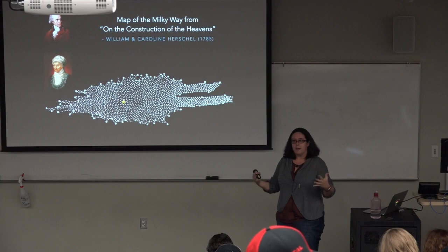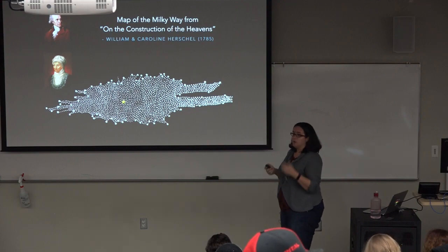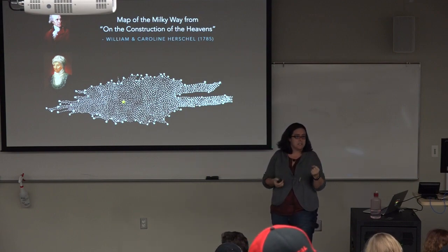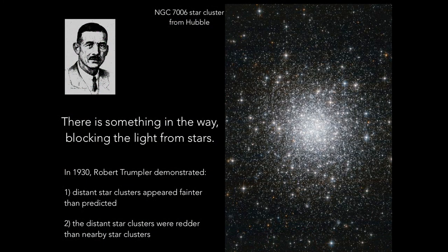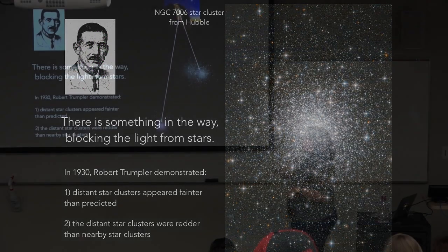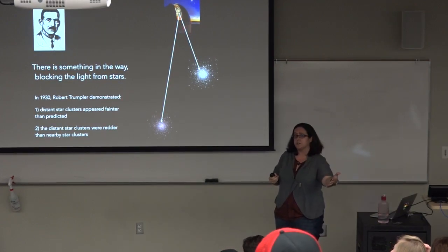People were generally aware that something was blocking starlight, but it wasn't clear until much later what it actually was. The experiment that gave the clearest insight was done by astronomer Robert Trumpler. In 1930, he published a paper demonstrating two important things. He was looking at clusters of stars and noticed that very distant star clusters appeared fainter than predicted. He also observed that these distant, fainter star clusters were also redder. So here's the key observation: the further away star cluster looks fainter than expected, and it looks redder.